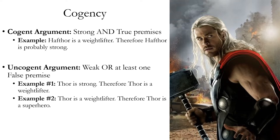An uncogent argument is either weak or has at least one false premise, or both. Example one: Thor is strong, therefore Thor is a weightlifter — this is logically weak, so that's enough to make it uncogent. Example two: Thor is a weightlifter, therefore Thor is a superhero. This has a false premise — it's false that Thor is a weightlifter — and it's also logically weak, because being a weightlifter doesn't give strong reason to believe someone is a superhero. So example two happens to be both weak and have a false premise. If an argument is either weak or has a false premise or both, it counts as uncogent.